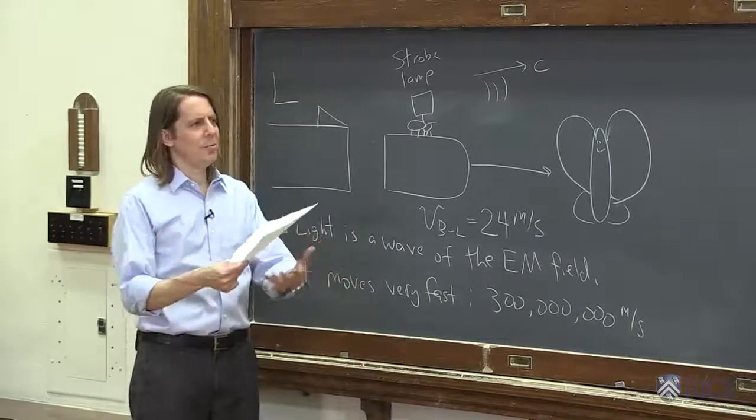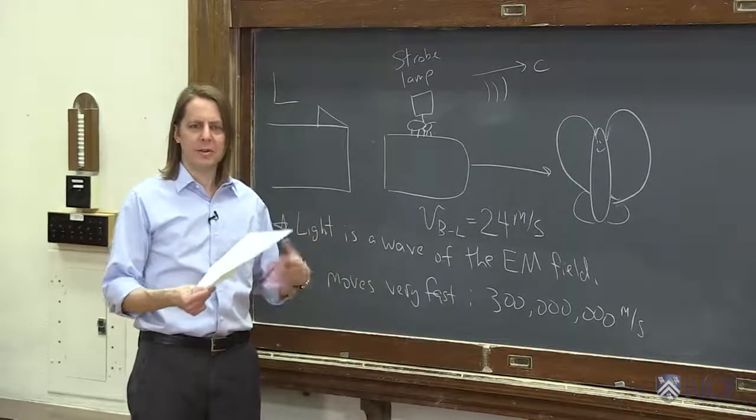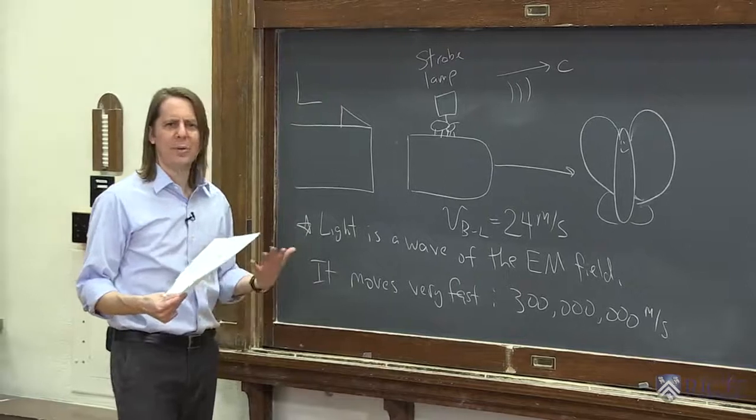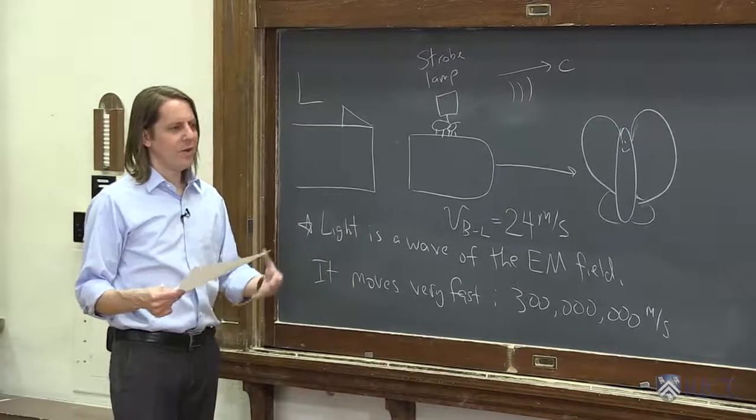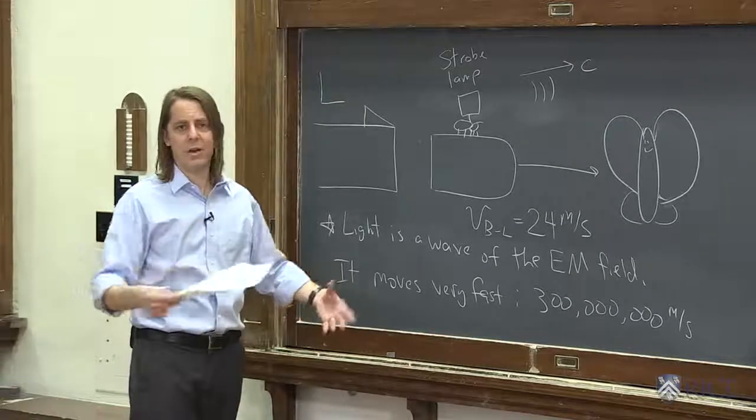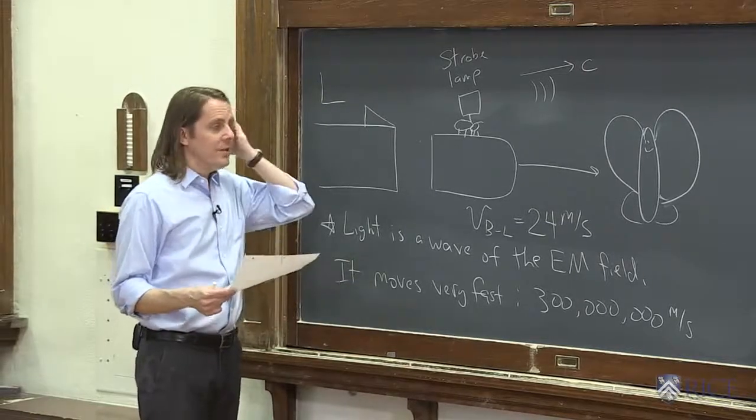And they thought, well, it must be sitting at rest with respect to something. So surely we can eventually detect this thing. So they called it the luminiferous ether. So how can we detect this ether and figure out, is it stationary with the Earth, or is it moving with the sun, or is it stationary with a galaxy?